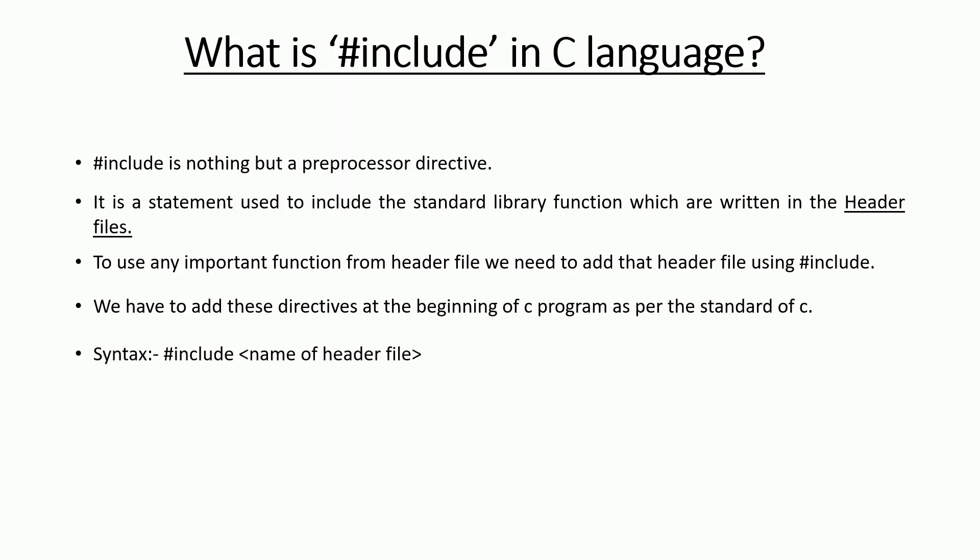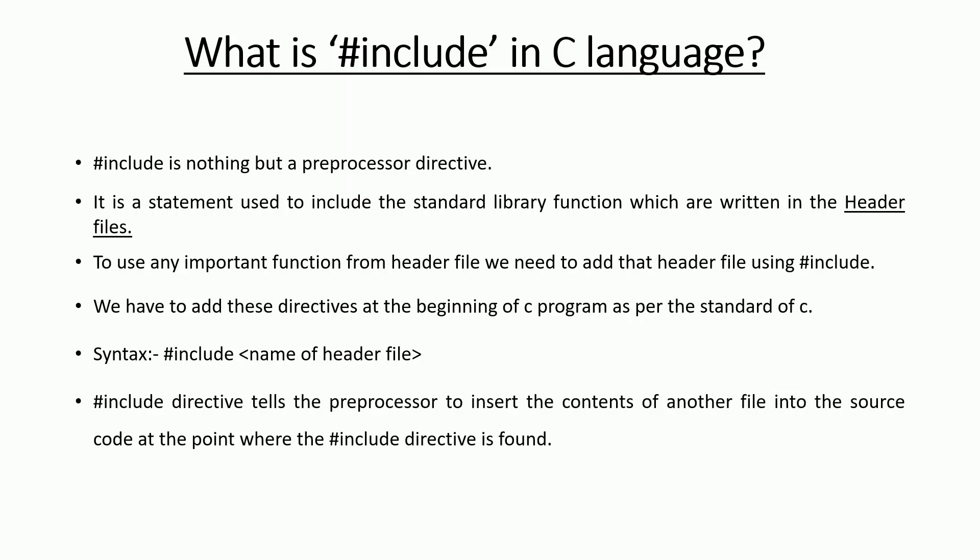For the syntax, we have to use the hash include keyword, then inside angle brackets we put the name of the header file. That is the simple hash include directive — it tells the preprocessor to insert the content of another file into the source code at the point where the hash include directive is found.